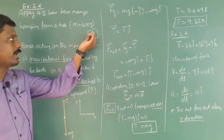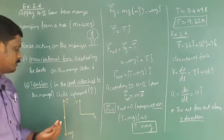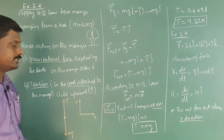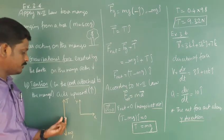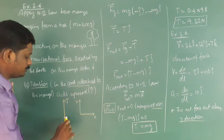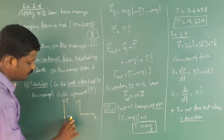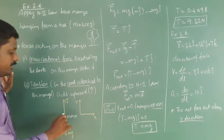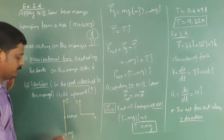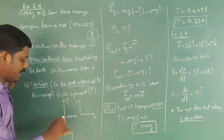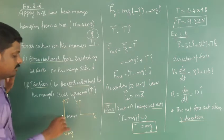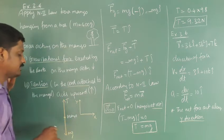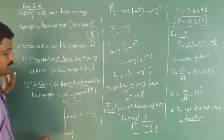Treating the mango as a point object: what are the forces acting? Gravitational force acts downwards, and the tension acts upwards.